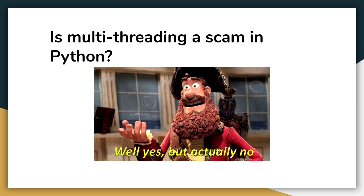A very popular controversy in Python is about multi-threading. It's a bit different from how we use multi-threading in C++ or Java. There are some limitations and conditions we need to know about before we jump into multi-threading in Python. We usually think it doesn't work, but it does in some programs — we'll see where it does and where it does not. To understand multi-threading in Python properly, let's look at how the interpreter works.